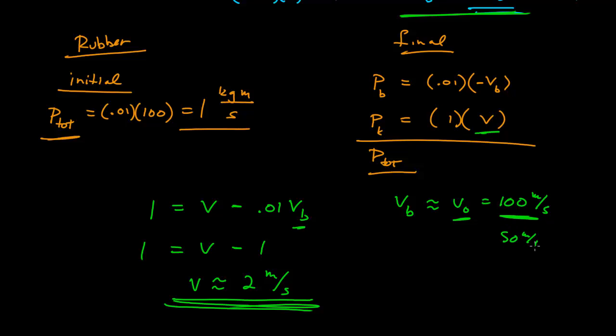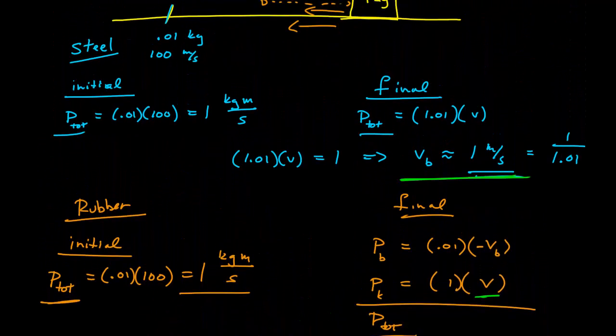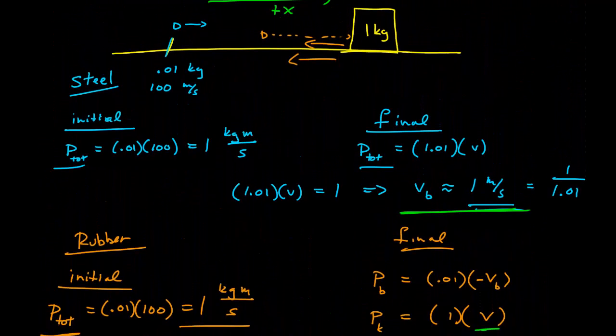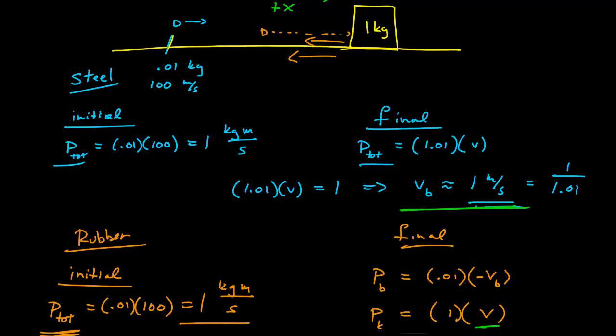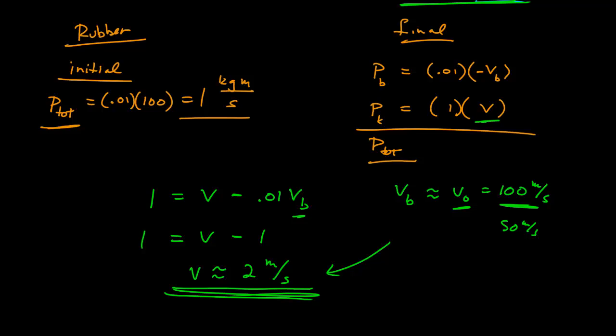In any case, as long as a rubber bullet bounces at all, the main block will leave with a larger velocity than with the steel bullet that sticks. It delivers a larger impulse than the steel bullet, and so with it bouncing off, the rubber bullet knocks it further.